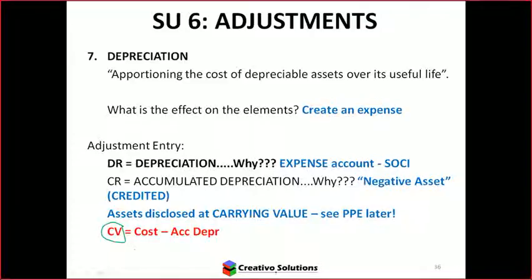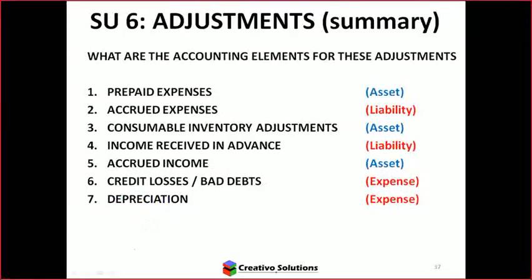We've looked at this before and we'll look at it again. We'll recap some PPE in terms of depreciation — cost price, straight line, and diminishing balance. Are you all right with those seven adjustments? Perfect. So there's a summary: we've gone through all seven now, and we know which are assets, liabilities, and expenses. Those are adjustments that can occur in the actual trial balance.